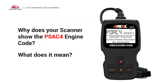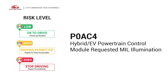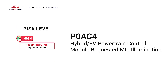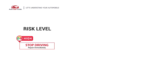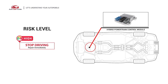Why does your scanner show the P0AC4 engine code? What does it mean? P0AC4 is a diagnostic trouble code for hybrid or EV powertrain control module requested malfunction indicator lamp illumination. This code indicates that the hybrid powertrain control module has set an emission-associated hybrid powertrain code.